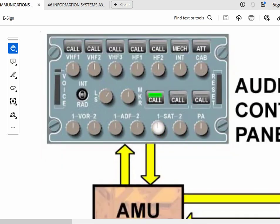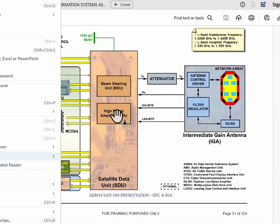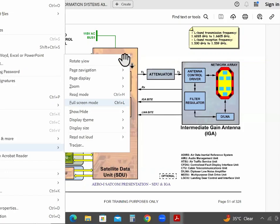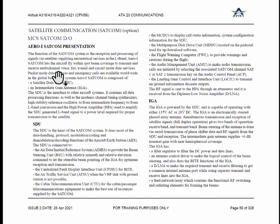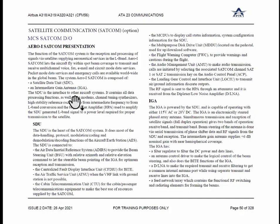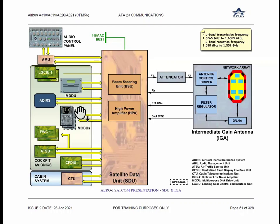Now I will show you some of the interfaces. The function of SETCOM is reception and processing of signal via satellite supplying aeronautical services in L-band. SETCOM lets the aircraft fly within the spot beam cameras to transmit and receive multiple channel voice, fax, email, etc. It is composed of a satellite data unit and IGA. SDU is interfaced to various aircraft systems and contains all data processing functions as well as modem, channel tuning, synthesizer, and all electronic circuitry inside.